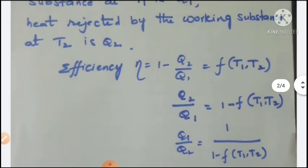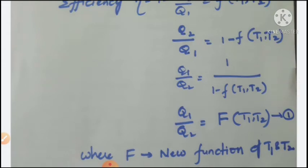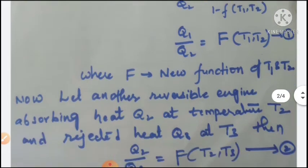The efficiency, as we know from the earlier topic, can be written as η equal to 1 minus Q2 by Q1, which is a function of temperatures T1 and T2. From this, Q2 by Q1 can be written as 1 minus F(T1, T2). We also assume Q1 by Q2 equal to F(T1, T2) — that is equation number 1 — where F is a new function of temperatures T1 and T2.